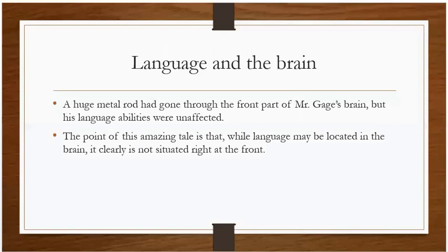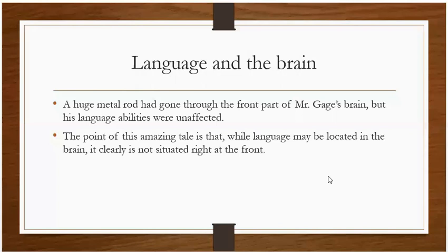We know that language is present in the brain, and there are examples which indicate it is located in certain parts. For example, a huge metal rod went through the front part of Mr. James's brain, but his language abilities were unaffected. This tells us that while language may be located in the brain, it is clearly not situated right at the front — it has its own specific parts.